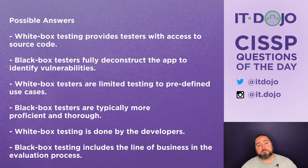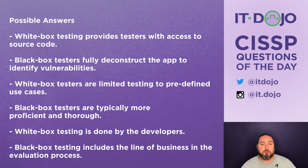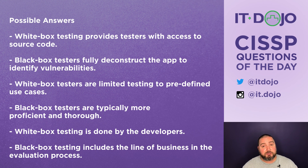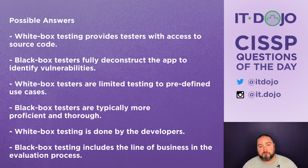White box testing is much more focused on the internal structure of the software — the source code and the way the code is written and behaves. It's much less focused on functionality, instead putting the software through its paces from an internal structure perspective. A key benefit is that you get much better coverage of all the different code, testing all the if-then statements and loops that may exist.